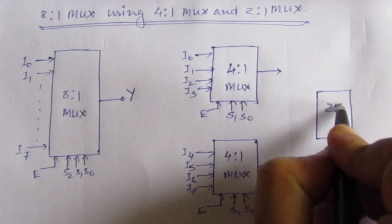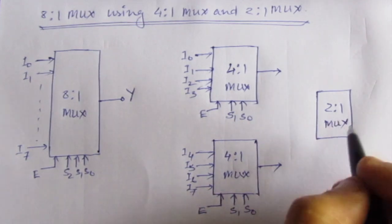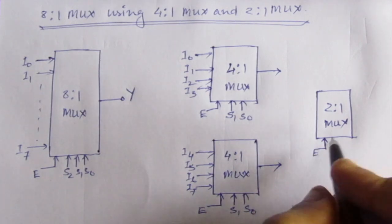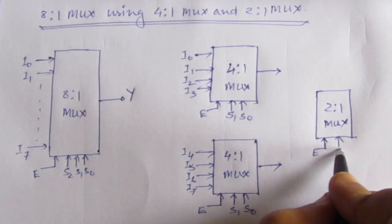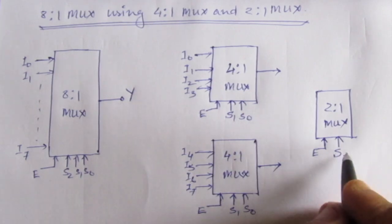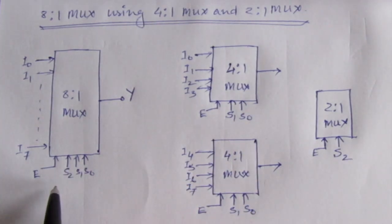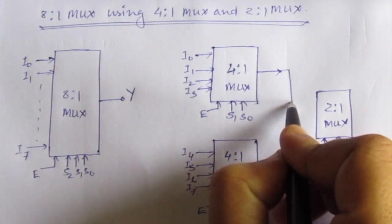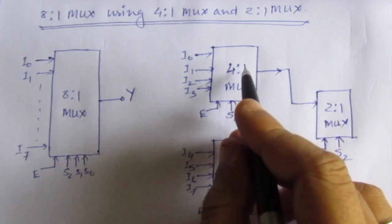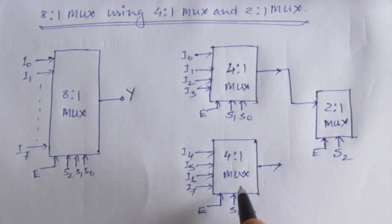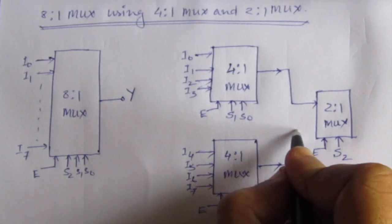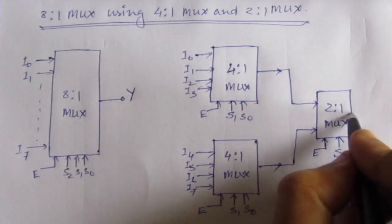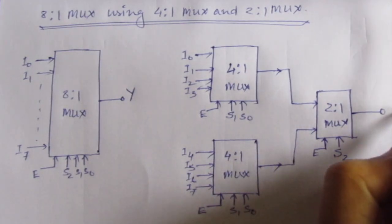We add a 2-to-1 multiplexer. This multiplexer also has one enable line. We will apply the S2 select line to this 2-to-1 multiplexer. Its two inputs will be the output lines of the upper 4-to-1 multiplexer and the lower 4-to-1 multiplexer. These outputs are given as inputs to this third multiplexer, and we get one final output Y.